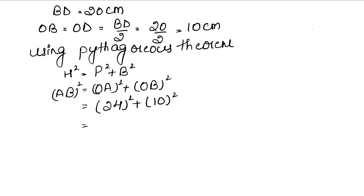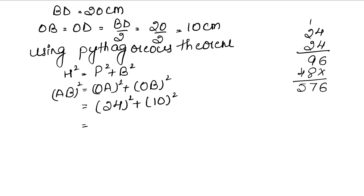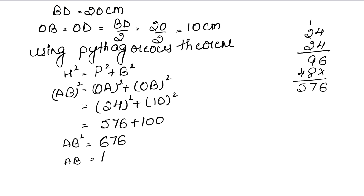24 squared equals 576, and 10 squared equals 100. So AB² = 576 + 100 = 676. Therefore AB = square root of 676.